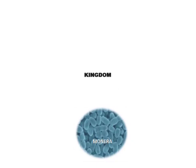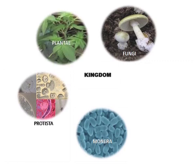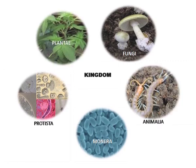Kingdom Monera, Kingdom Protoctista or Protista, Kingdom Fungi, Kingdom Plantae and Kingdom Animalia. He did this because there are diversified organisms which are found on this beautiful planet Earth, and in order to differentiate each one of them, he grouped them into certain groups depending upon their similarities and differences.